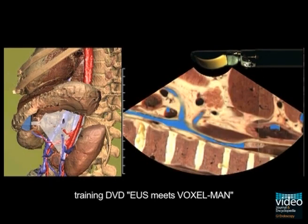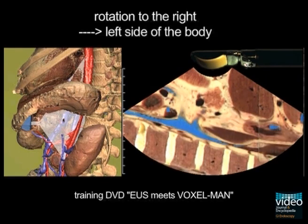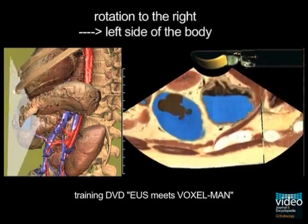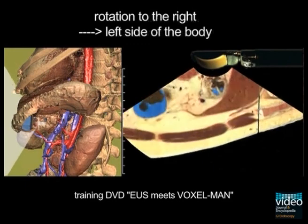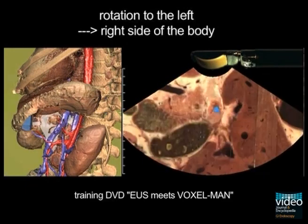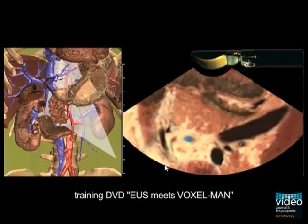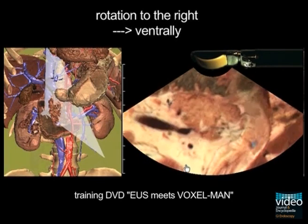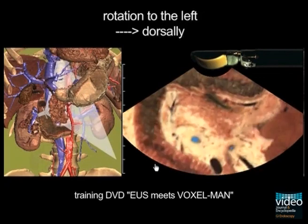If the transducer is directed dorsally and placed along the longitudinal axis of the body, a rotation of the instrument to the right will move the transducer to the left side of the body, and a rotation to the left to the right side of the body. Because of the anatomical position of the duodenum, a rotation at the level of the papilla to the right moves the transducer ventrally, and to the left dorsally.